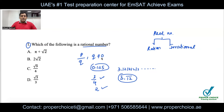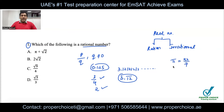Which numbers are irrational? Irrational numbers are those which are non-terminating and non-repeating. For example, pi — written as 22/7 — can be represented as a fraction, but it is non-terminating and non-repeating.